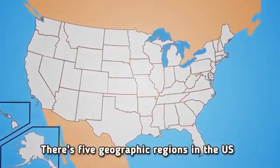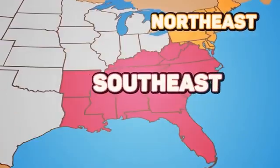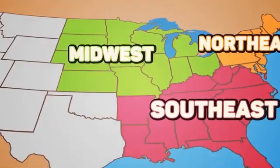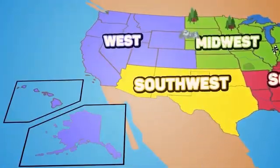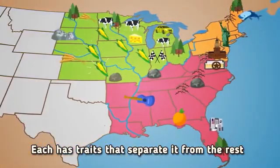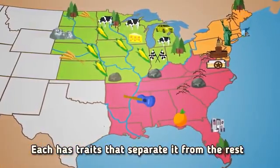There's five geographic regions in the U.S.: Northeast, Southeast, Midwest, Southwest, and the West. Each has traits that separate it from the rest.